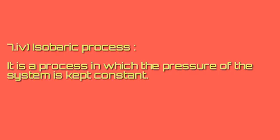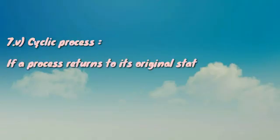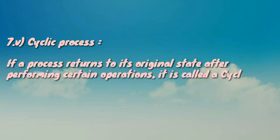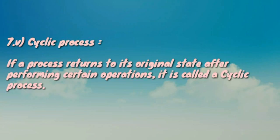Cyclic process means after performing some operations — that means after performing some thermodynamic activities — if the system returns to its original state, its original position, after performing those activities and operations, such a type of process is called a cyclic process.